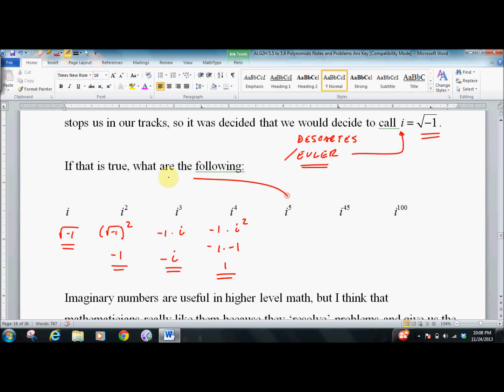When you get to i to the fifth, you end up right back where you started. It's i. i to the sixth, i to the third, i to the fourth. It's on and so on. So you get 45th, you say, well, 44 plus 1. That means you're here. So you basically get i.